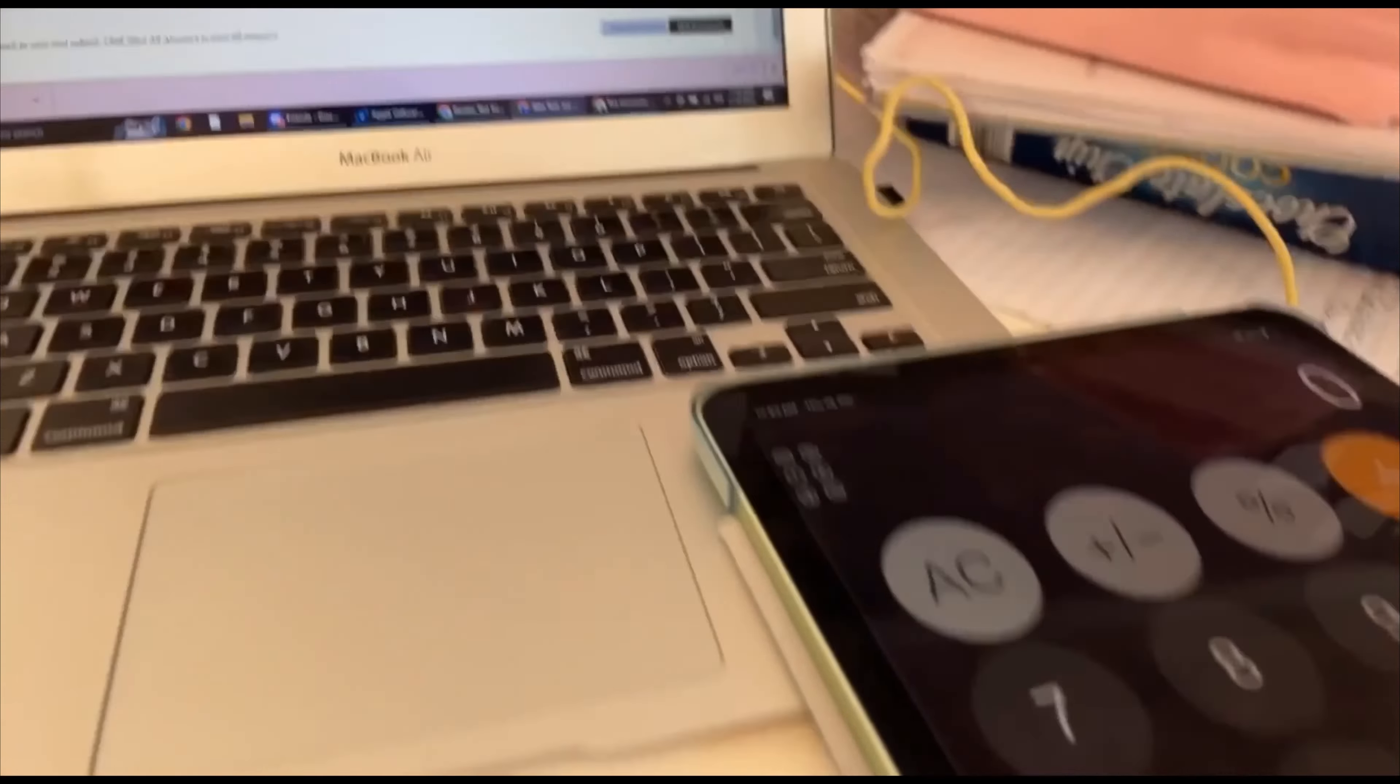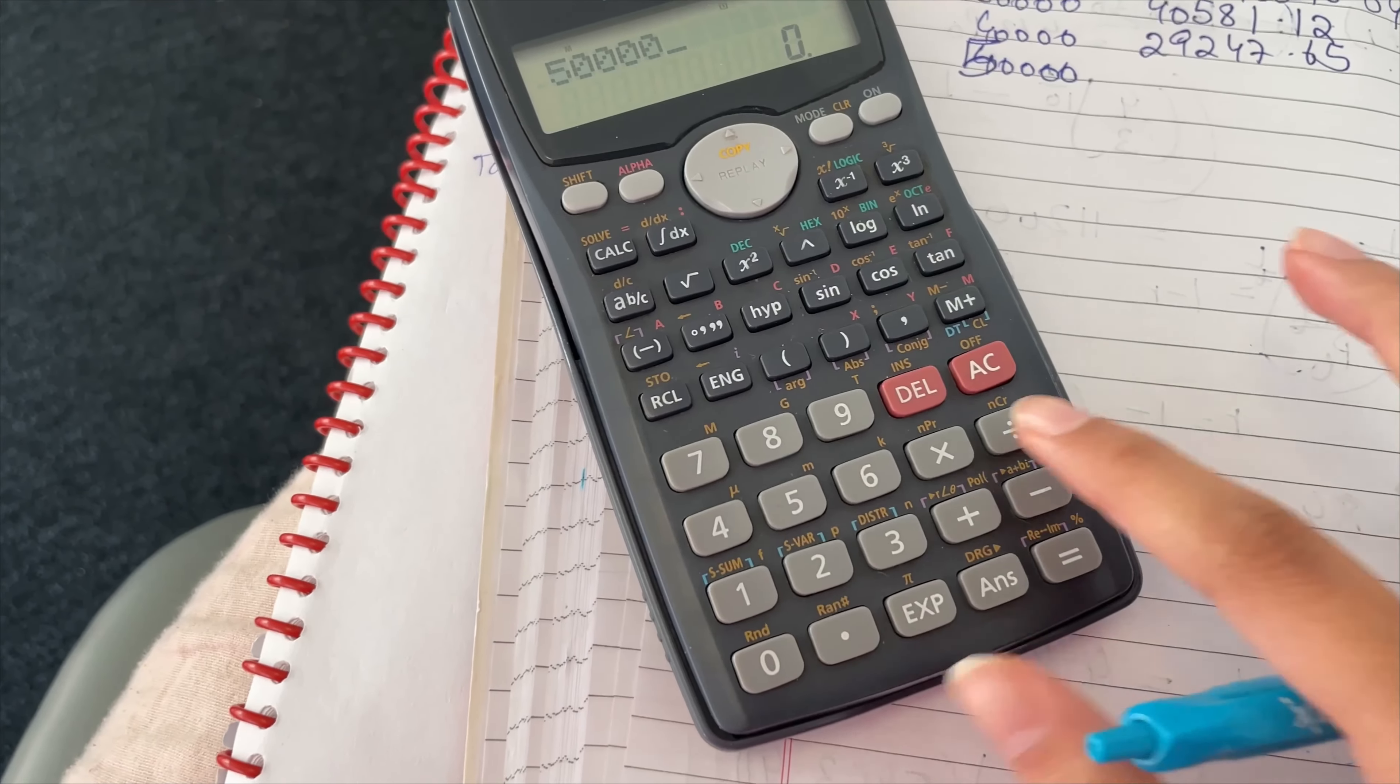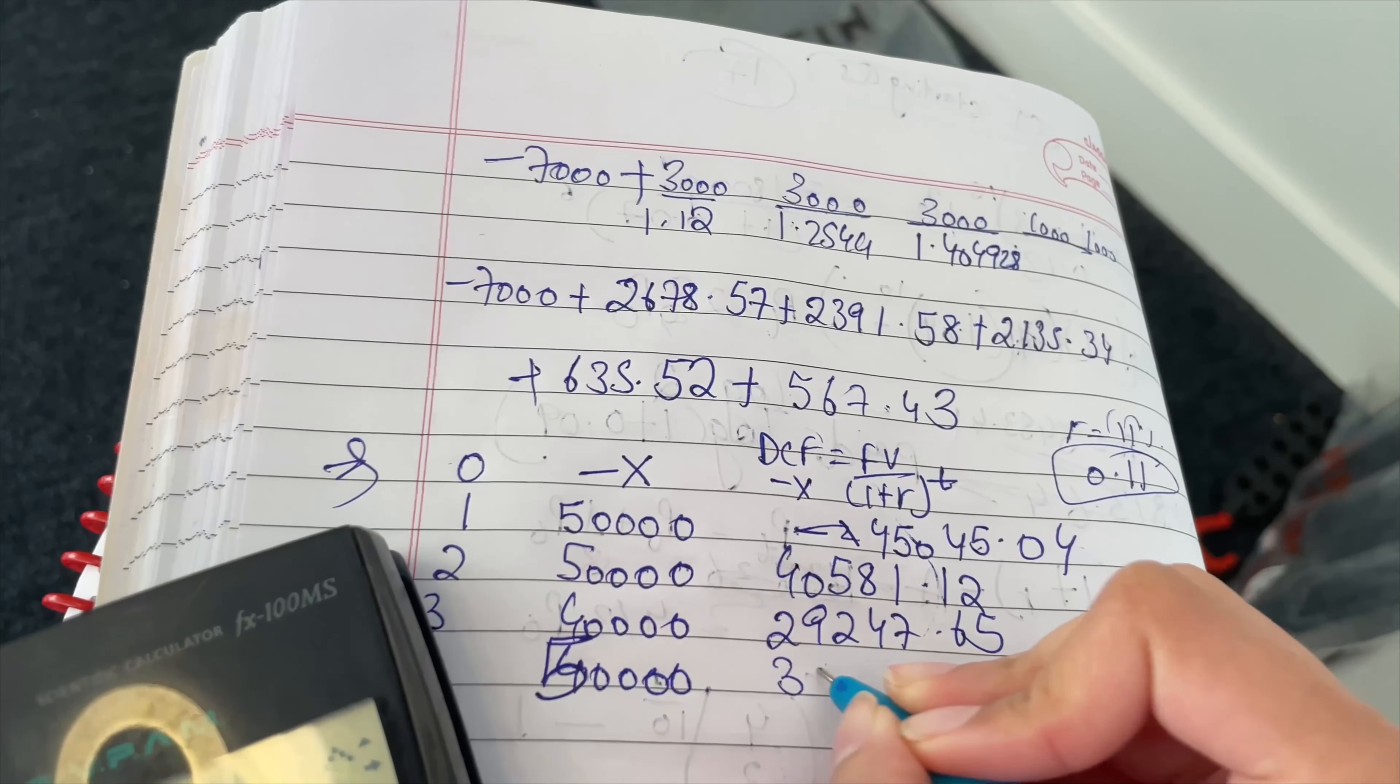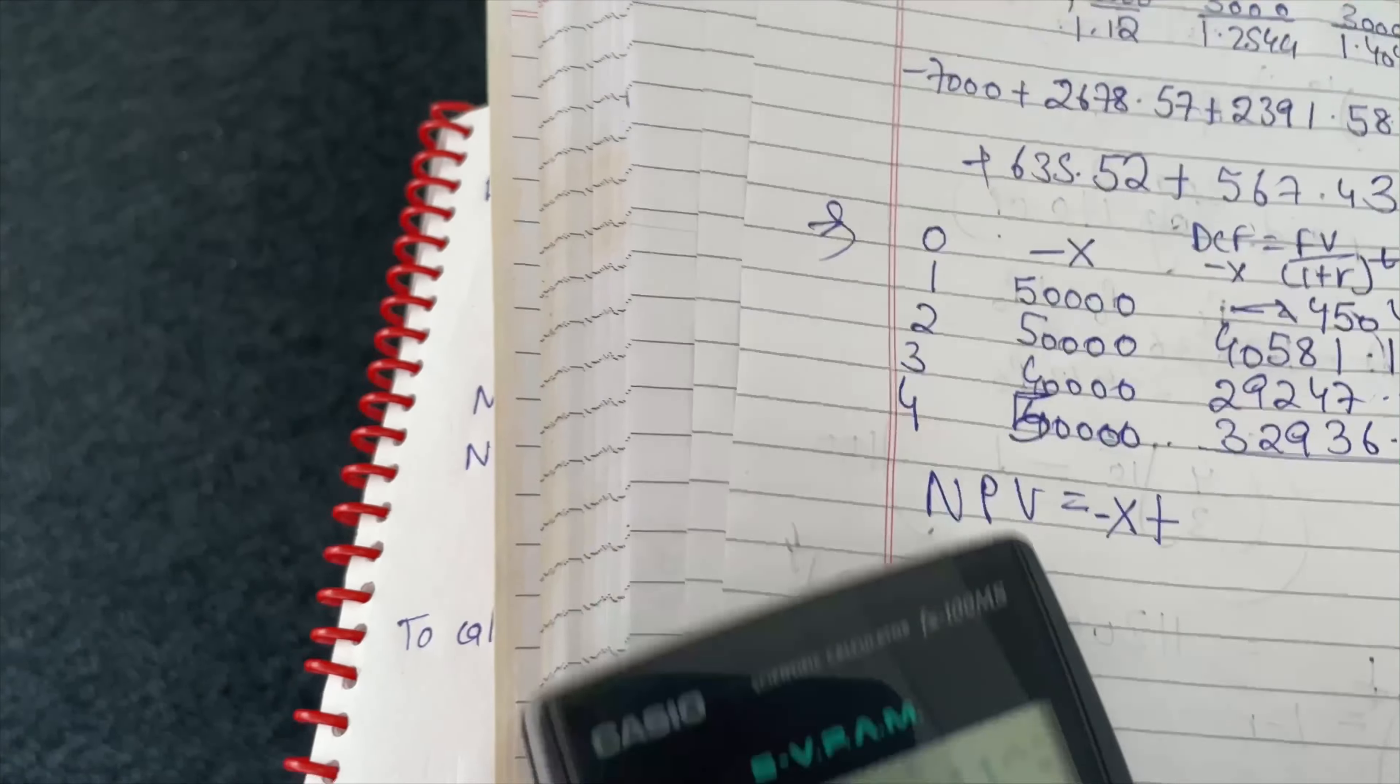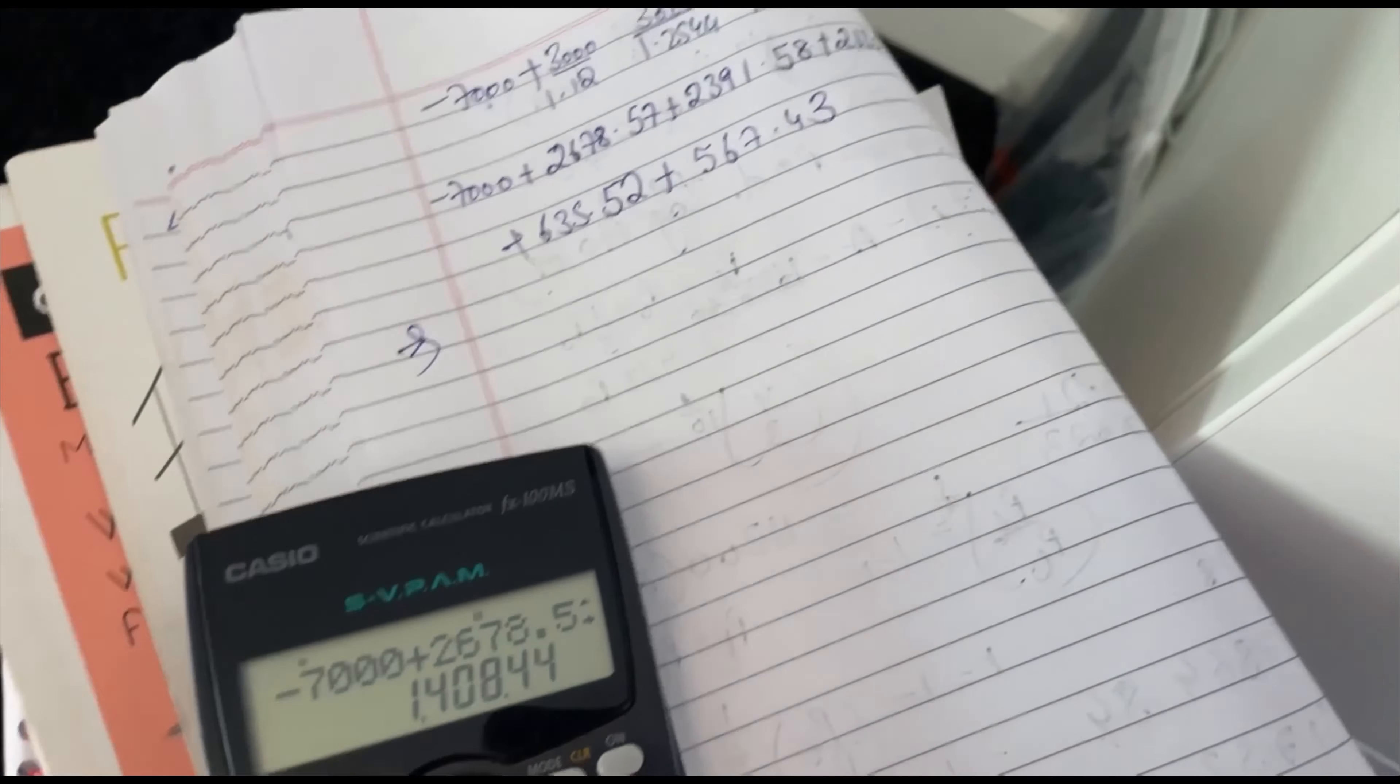Using the scientific calculator and solving the last question. It's 50,000 divided by 1.11 to the power of 4. That's 32,936.5. And PV equals minus X plus all of these things which I will have to add. 1,408.44.